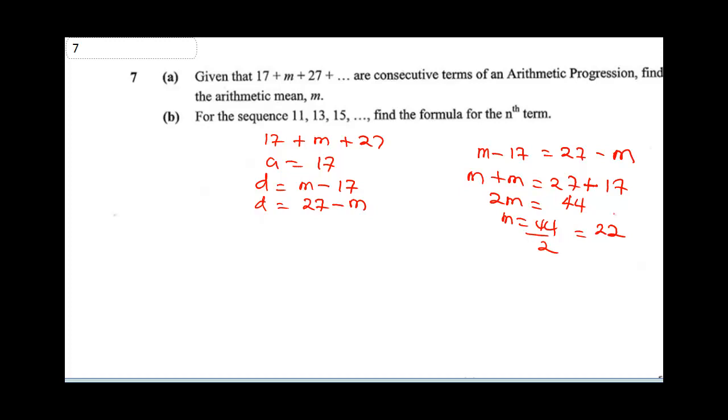Now, knowing that our M is 22, therefore our AP is going to be 17 plus 22 plus 27. So now you can see that the common difference is 5. So D is 5. This is what our AP looks like.